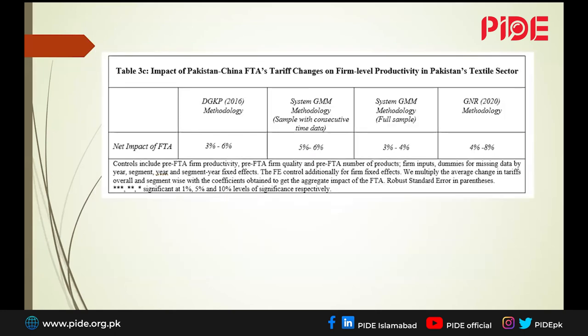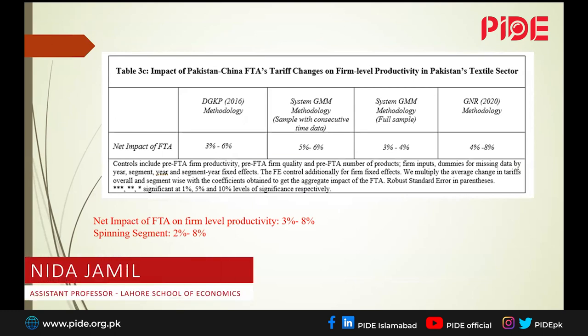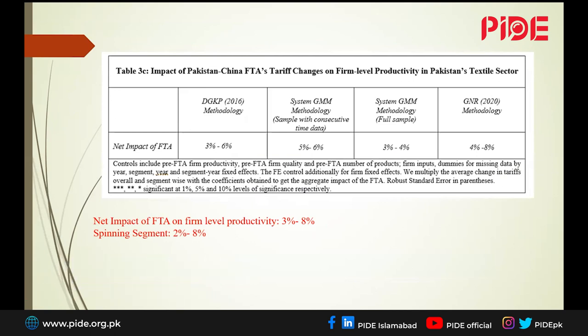In terms of the net impact of the FTA, whichever methodology we use, the net impact of the Pakistan–China free trade agreement on the productivity of textile firms has been around 3% to 8%. We do see productivity gains, but unfortunately they are low compared to what is found in the literature for other countries' FTAs. Looking at the spinning segment specifically, productivity improved by just 2% to 8% depending on methodology — significantly lower than what is found for other countries.